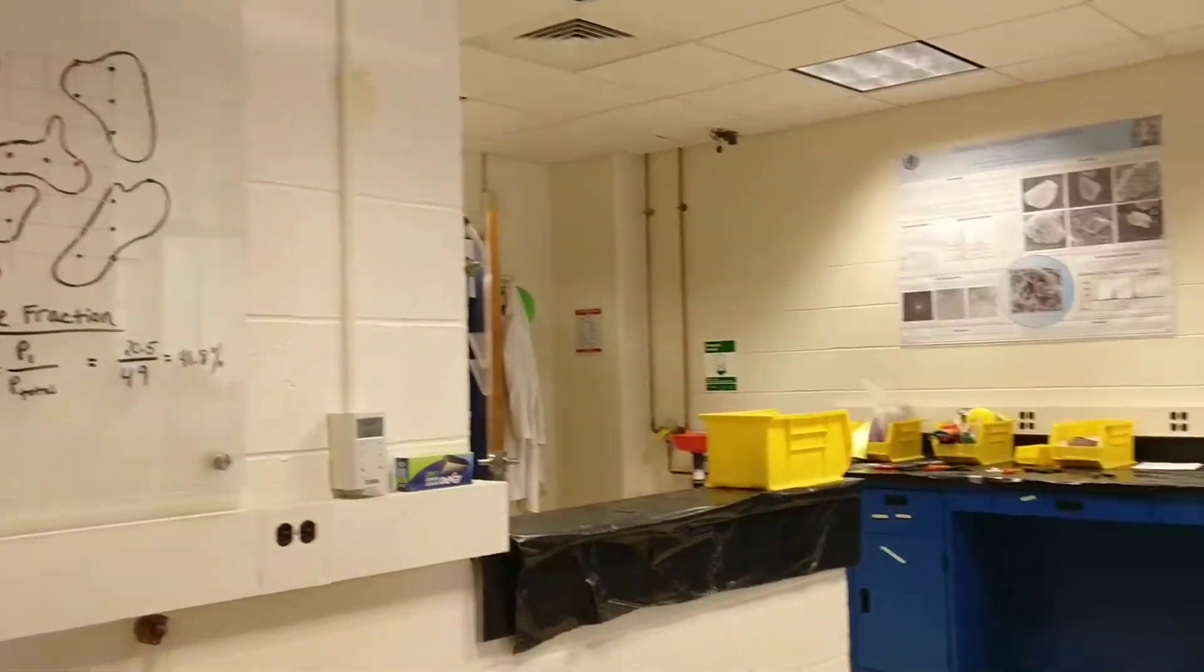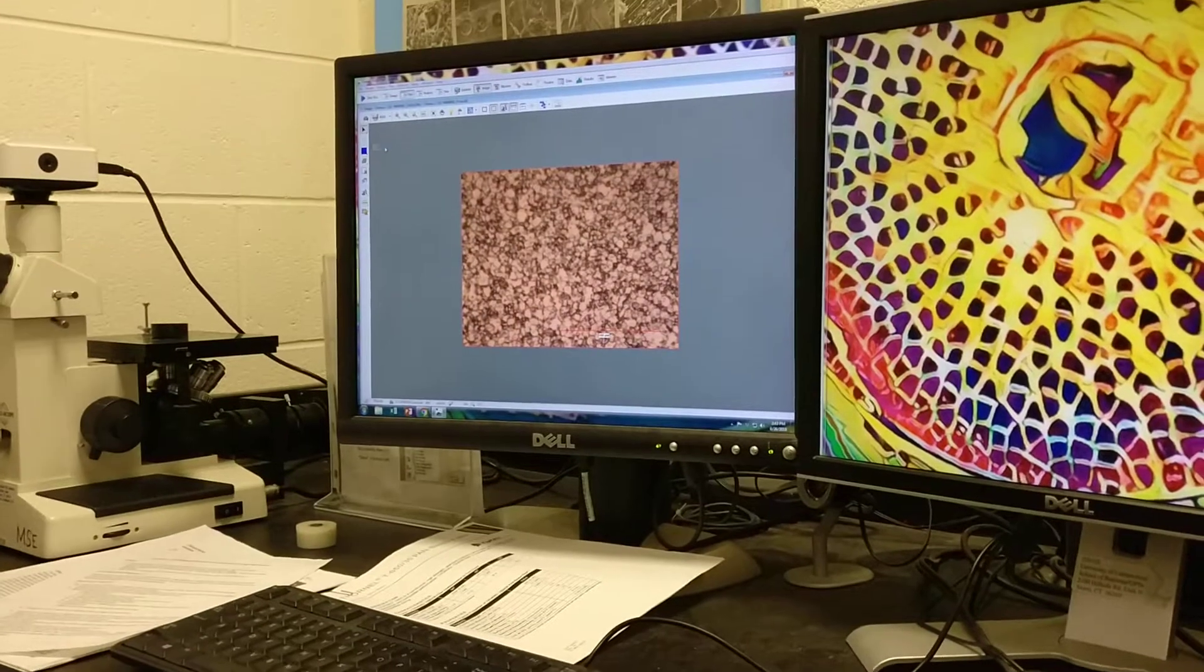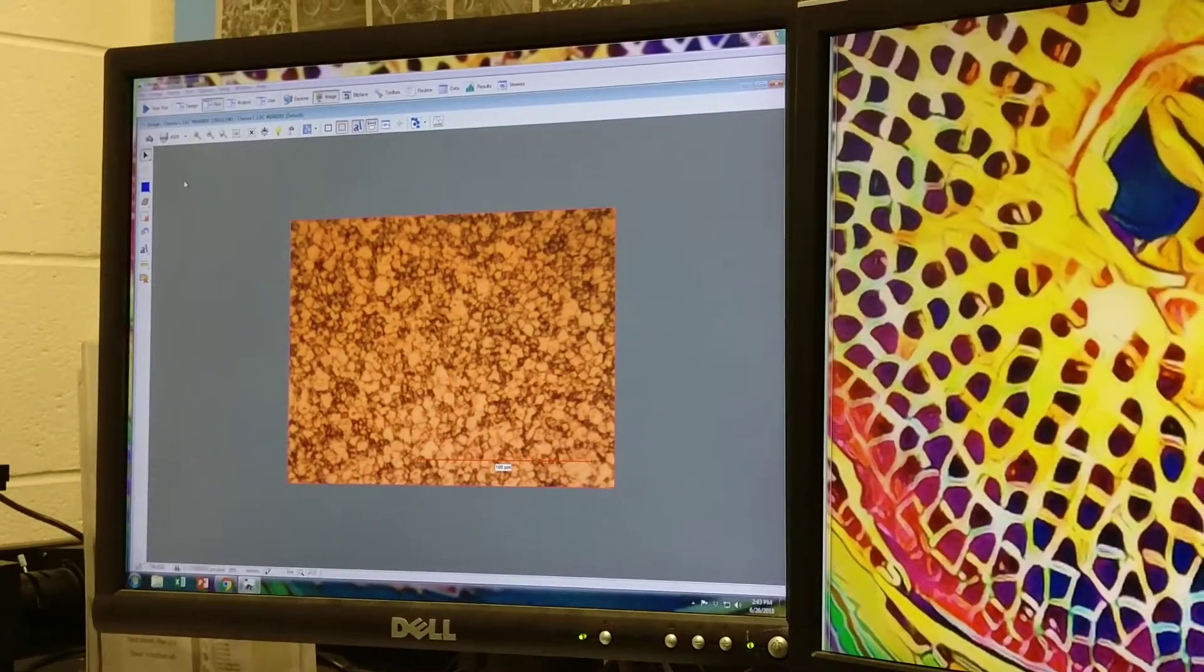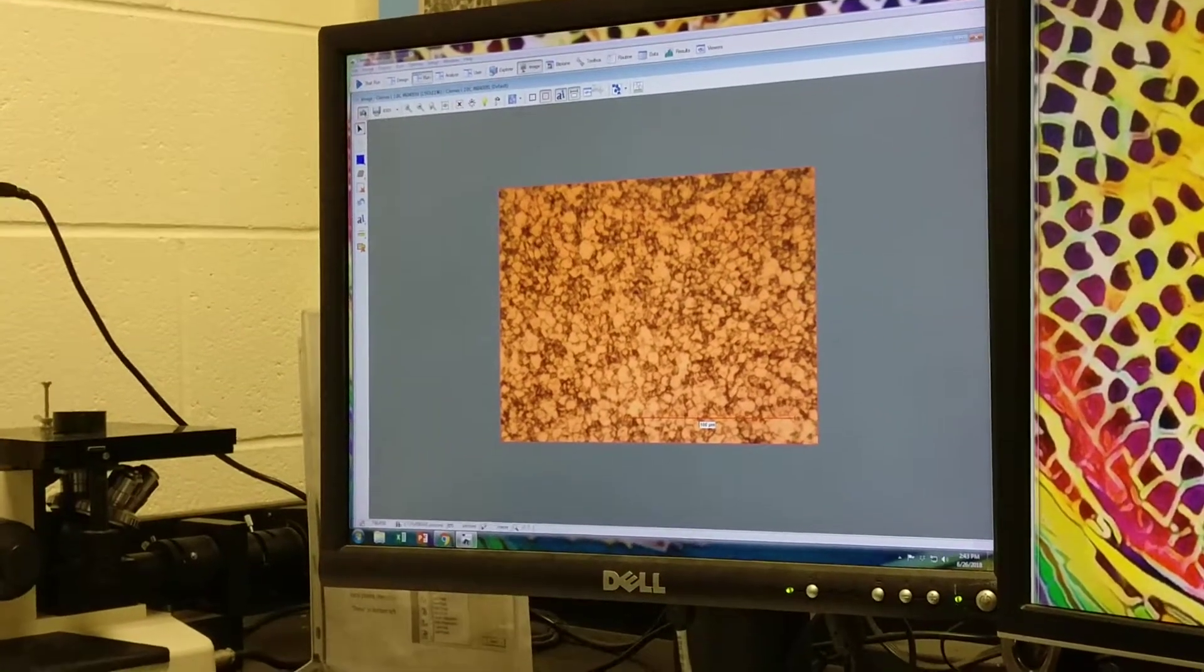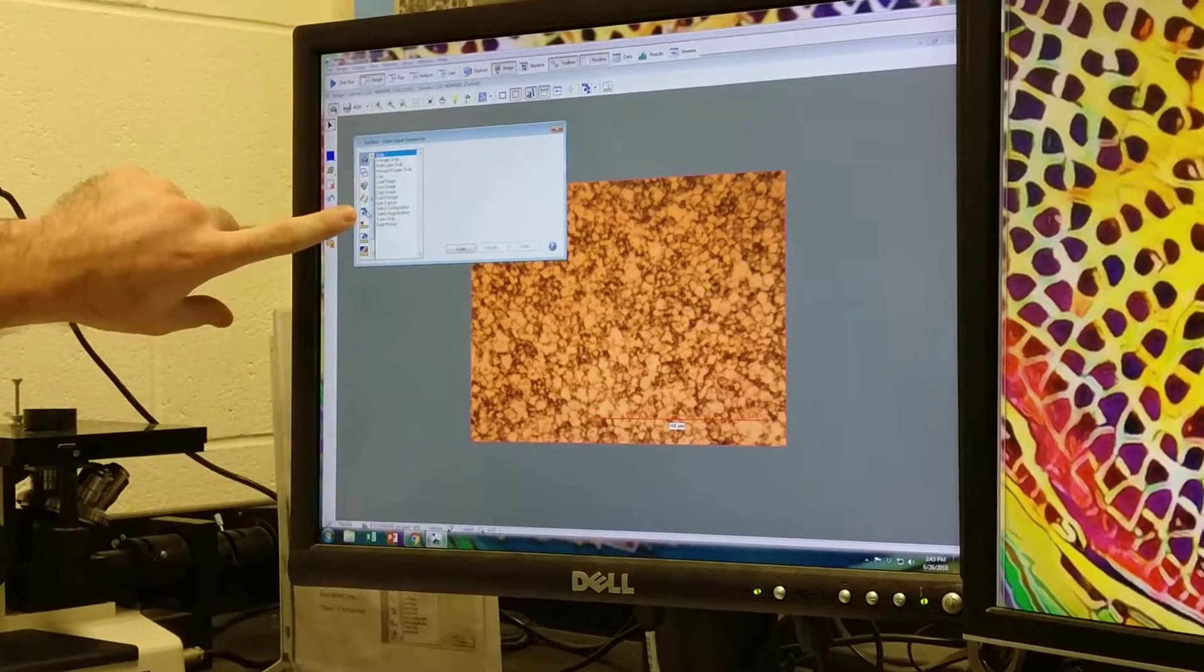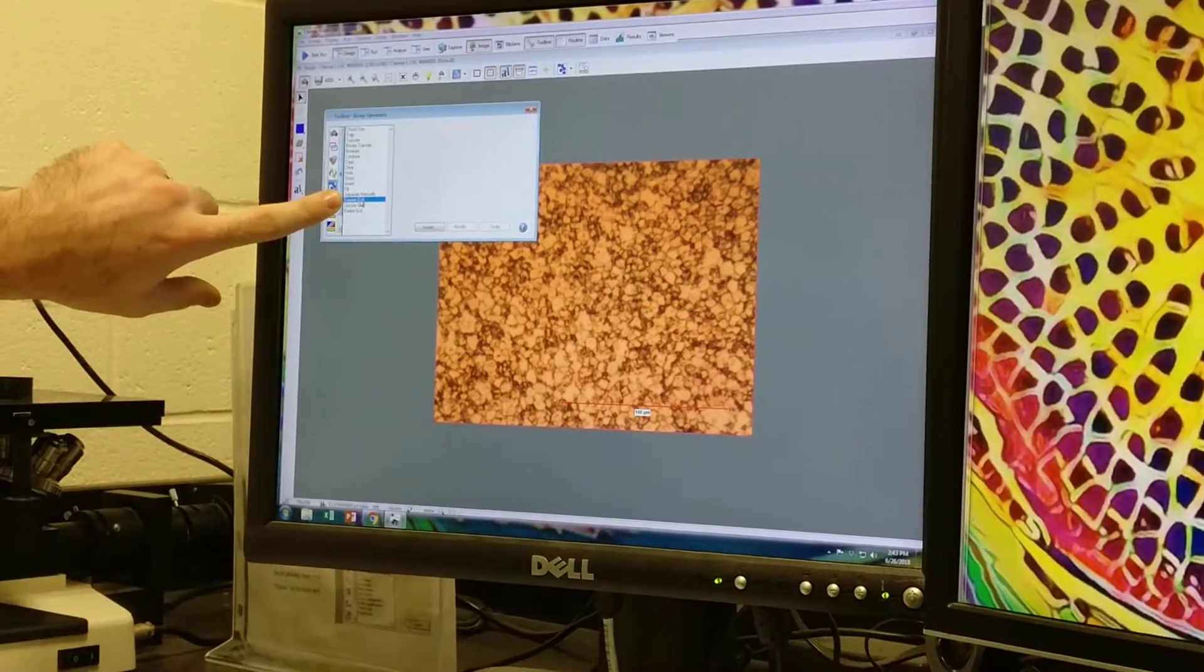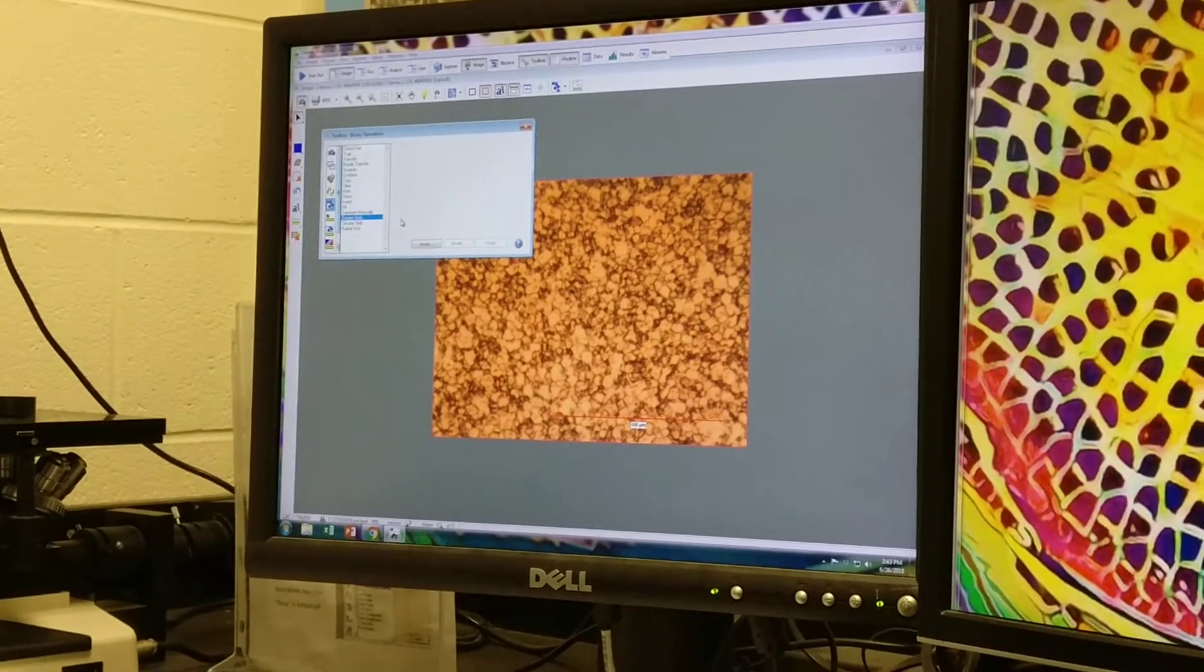I'll show you how to overlay a grid on top of this complex microstructure. First we're going to put it at 400x because it's at 400, get the light and focus correct, freeze the image with this camera icon. We're going to go to this toolbox button and click the fifth icon down. We're going to click square grid and insert.